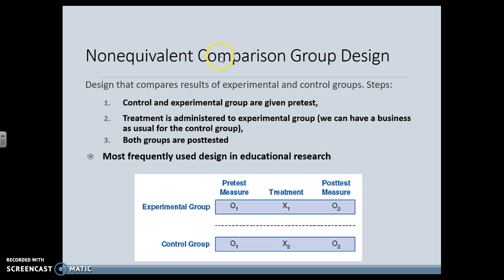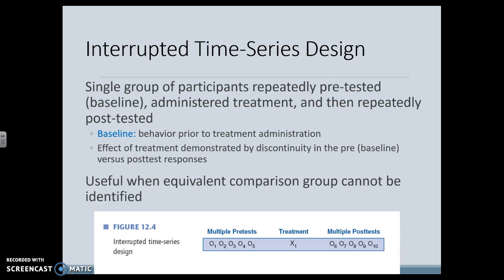Here we have non-equivalent groups — classrooms that are already intact. We're not randomly assigning anybody; they're already there. But we still have an experimental group and a control group: pre-test, do the treatment, post-test. That's the most frequent design used in education. Interrupted time series is another interesting one — we take multiple pre-tests to get a solid baseline, then do a treatment and take multiple post-tests, which allows us to see carryover and long-term effects. This can be really beneficial.